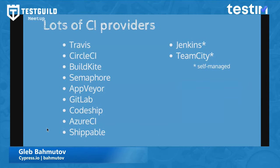There are lots of CI providers and I've dealt with all of them. I used to run my own Jenkins, my own TeamCity, my own GitLab CI. After a while I figured out it's not worth it — money-wise and time-wise. Unless your company's name is Travis or Circle or TeamCity or Jenkins, you should not be running your own self-managed CI provider. You're just going to pay more money for your time to get an inferior system.